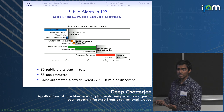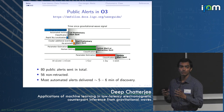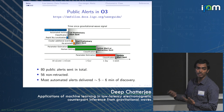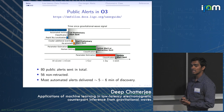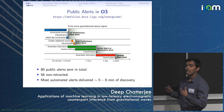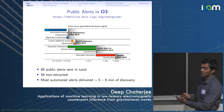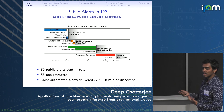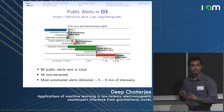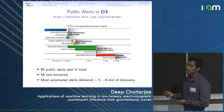A sky localization is computed from the data, along with classification and source properties. All of that information is packed into a machine-readable notice and sent out over the Gamma-ray Coordinates Network as what we call the first preliminary alert. Because there are multiple pipelines running in parallel, the events have to be clustered, re-annotated, and significance re-evaluated — that is done in the next few minutes, and then a second preliminary alert is also sent automatically.